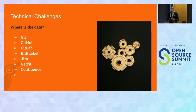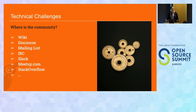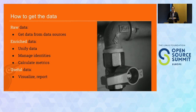Now let's move on to some technical challenges. When we want to start collecting metrics, the first question is: where do we get the data from, and where is the community? We want to think not just about where source code is being developed, but also where conversations are happening — mailing lists, Slack, forums. We want to be inclusive of all these spaces because all that conversation is important. Otherwise, we create a bias towards only code contributors, and there are so many other activities in an open source project that deserve recognition. When we get the data, we have several steps: get the raw data, enrich the data, then present it and make it useful.